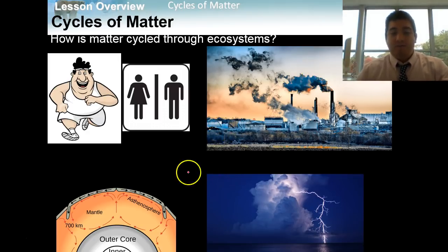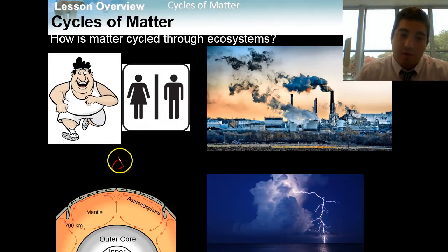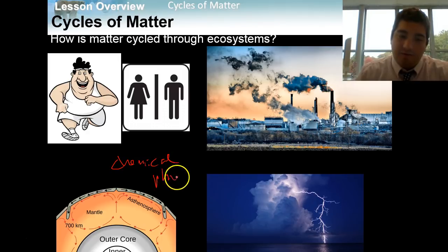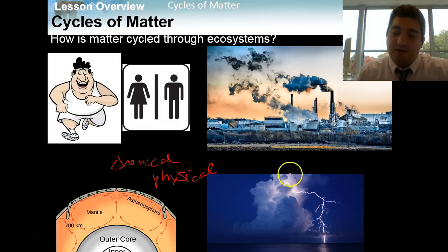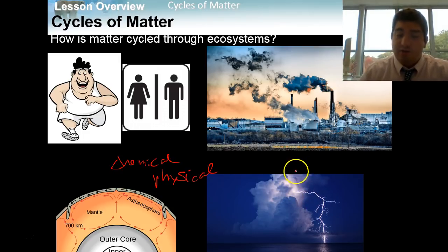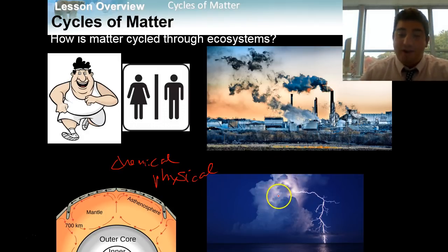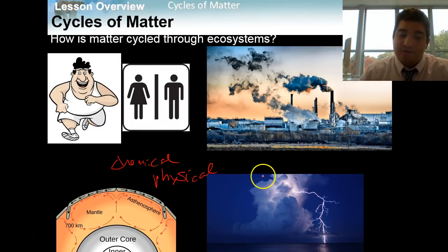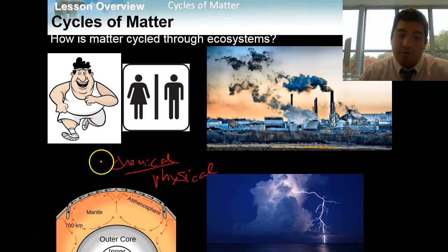The fourth way is chemical and physical processes. A great way to show this is a rainstorm with lightning. Lightning has lots of energy and it can chemically change molecules found in the atmosphere in an ecosystem. Rain is a physical process that moves matter through the ecosystem like water. So chemical and physical processes are the fourth way in which matter is cycled.